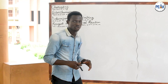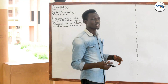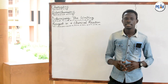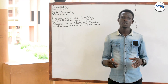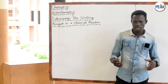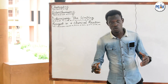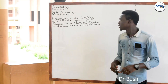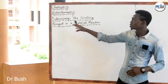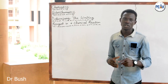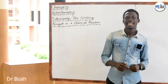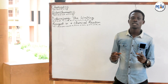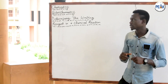Good day viewers, welcome to today's episode of Made Easy Clinic, brought to you by the Peak Construct for Higher Learning, aka The Peak Tutors. In the last episode we dealt with stoichiometry — specifically balancing ionic equations in acidic and basic medium. Today we are simply going to look at determining the limiting reagents in a chemical reaction.